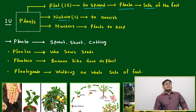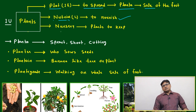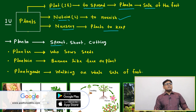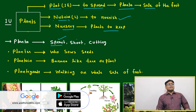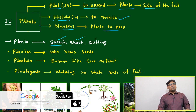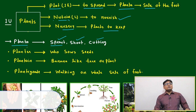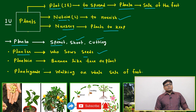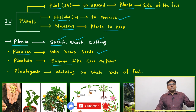Another root is 'nutride,' which means to nourish. That's where the word 'nursery' comes from — where plants are kept. Based on 'planta,' we can correlate this group of words: sprout, shoot, and cutting all come from 'planta.' A planter is one who sows seeds.